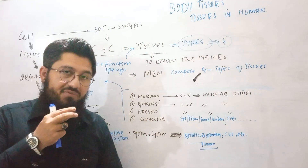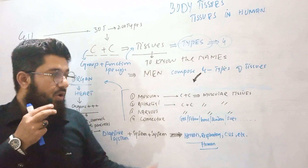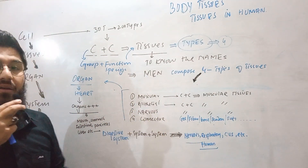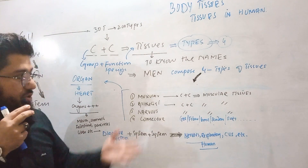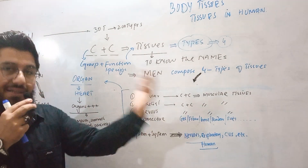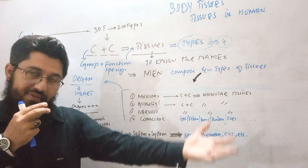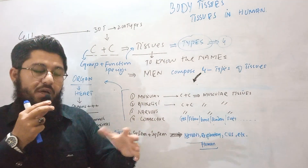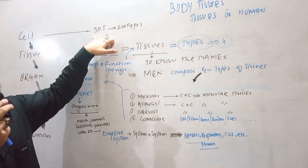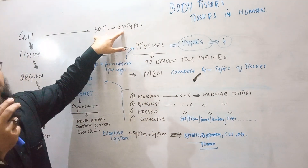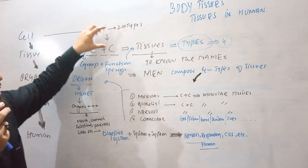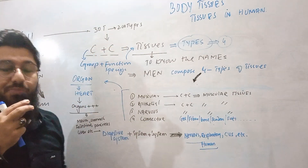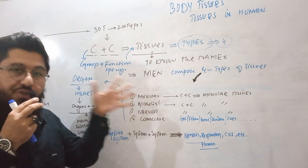Gel, fibers, bones, tendons, fats, etc. — all these grouped together make connective tissue. So we got how many? 30 trillion cells, which are made up of 200 types of cells. These cells group together in four different ways to make four different types of tissues.